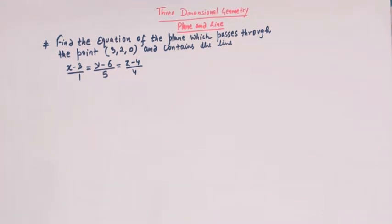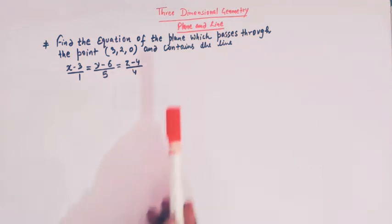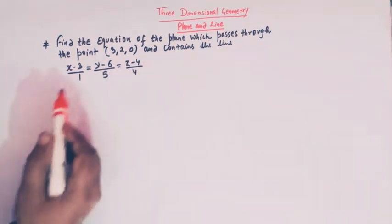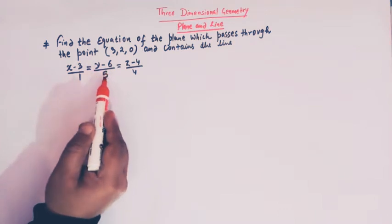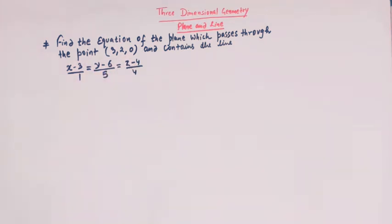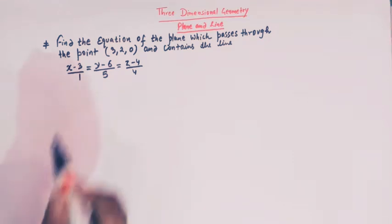Hello viewers, in today's class we are going to take up one important problem from three-dimensional geometry. This problem contains both a plane and a line. The problem is: find the equation of the plane which passes through the point (3, 2, 0) and contains the line x minus 3 over 1 equals y minus 6 over 5 equals z minus 4 over 4.